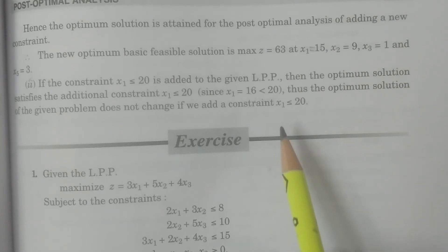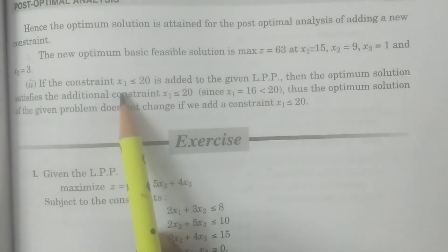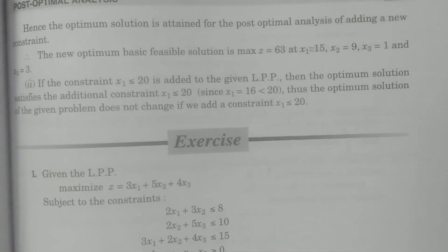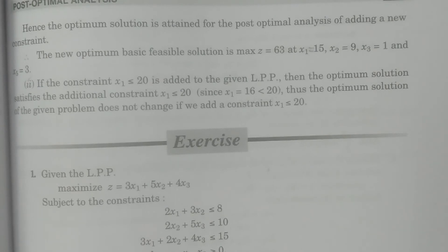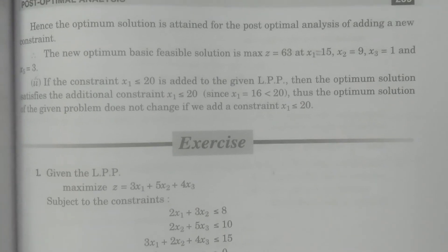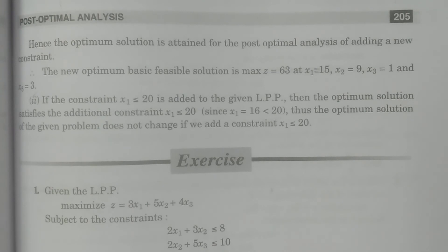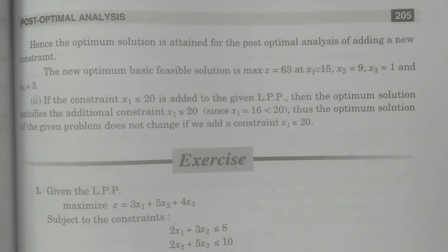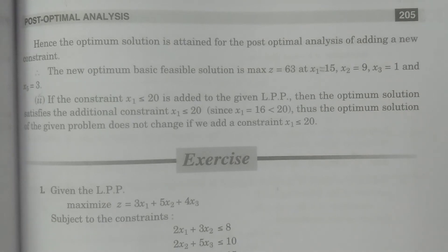That is what our second question covers — in the addition of the constraint x1 ≤ 20. These are the two particular problems we have considered in the addition of a new constraint, and the two different cases we have studied separately. Hope you understand — this is the procedure of observing what are the structural changes due to the addition of a constraint in any linear programming problem, and the post-optimal analysis. Thank you so much.